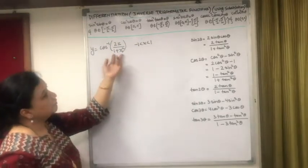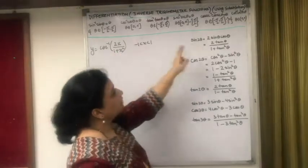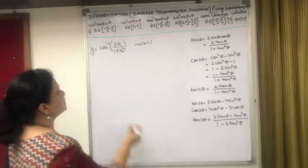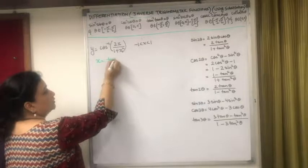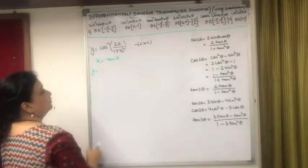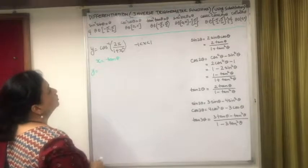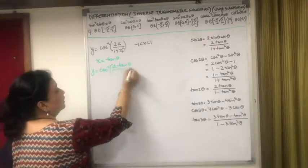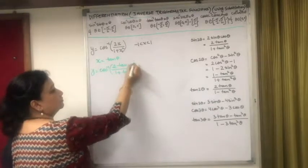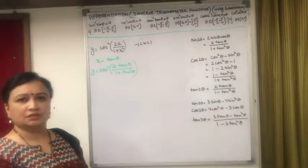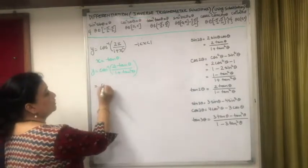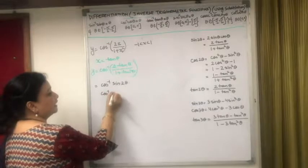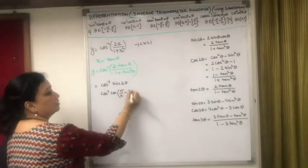If y = cos⁻¹(2x/(1+x²)) with -1 < x < 1: correlate 2x/(1+x²) with 2 tan θ/(1 + tan²θ), so substitute x = tan θ. We get y = cos⁻¹(2 tan θ/(1 + tan²θ)) = cos⁻¹(sin 2θ). Writing sin 2θ as cos(π/2 - 2θ), we get y = cos⁻¹(cos(π/2 - 2θ)).